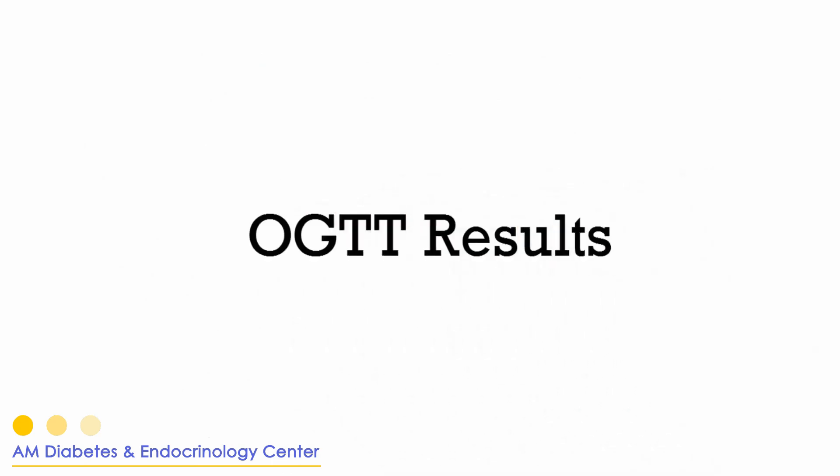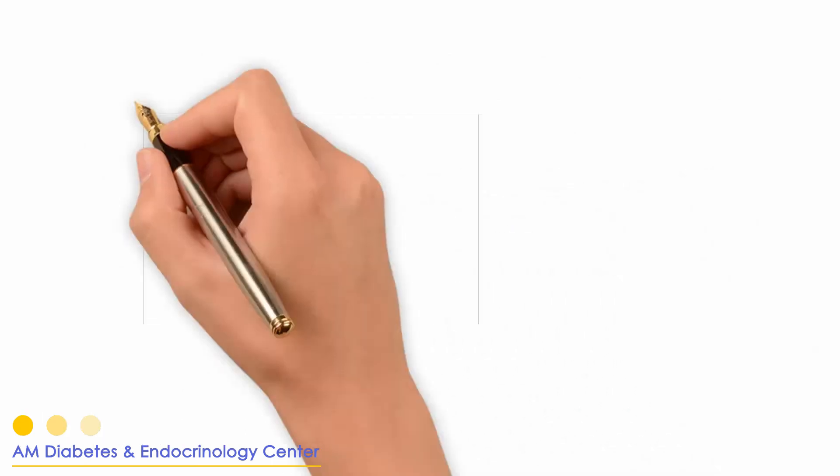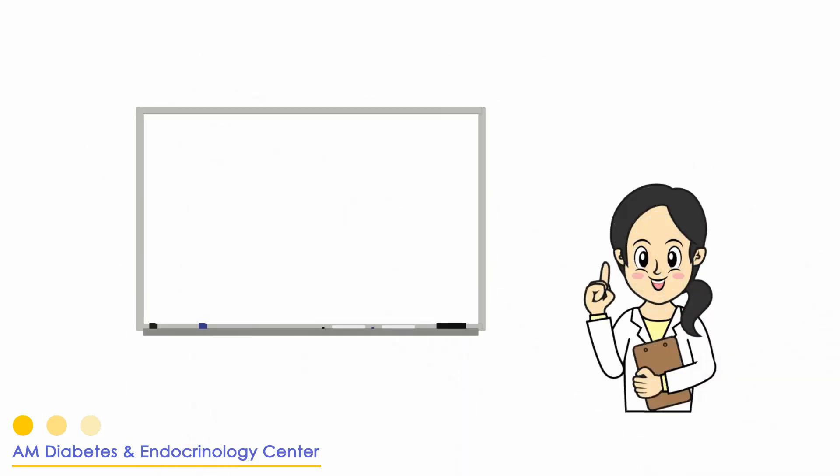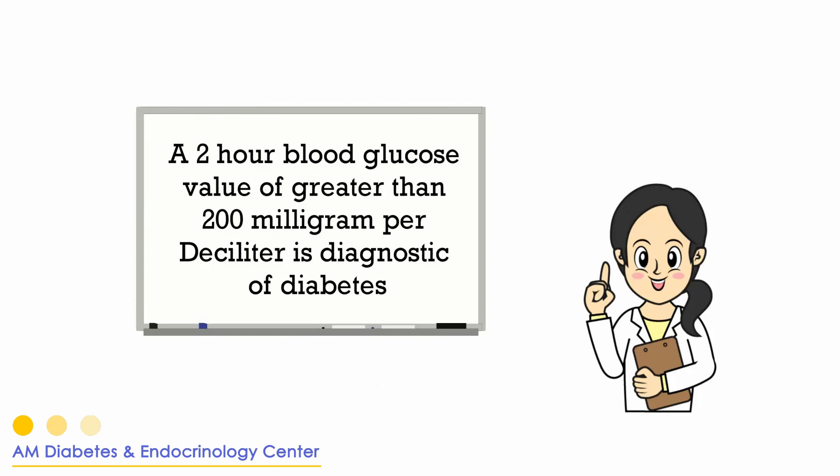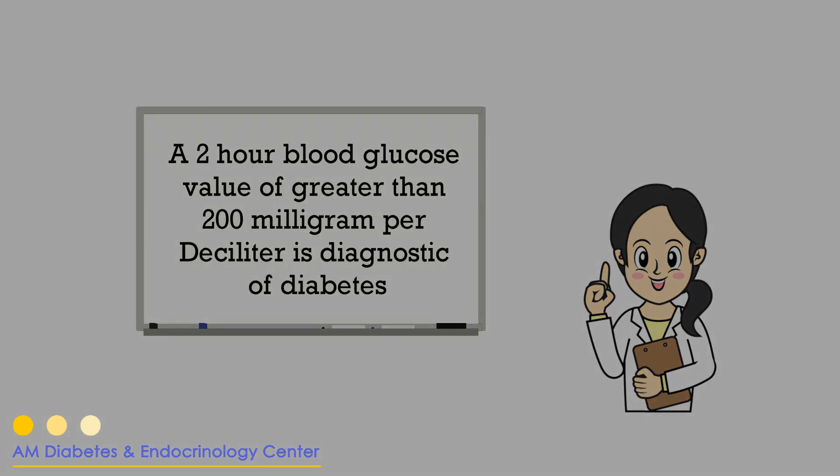OGTT results. 1. A 2-hour blood glucose value greater than 200 mg per deciliter is diagnostic of diabetes.